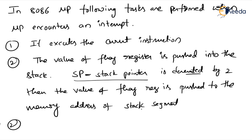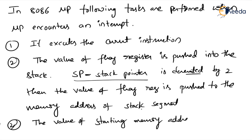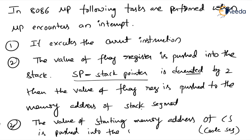Third step: the value of the starting memory address of CS — the code segment — is pushed into the stack. So we are pushing both the stack pointer decrement and the code segment value.